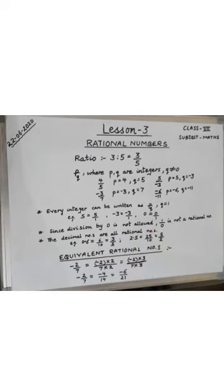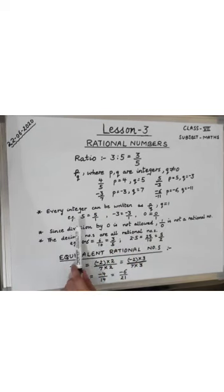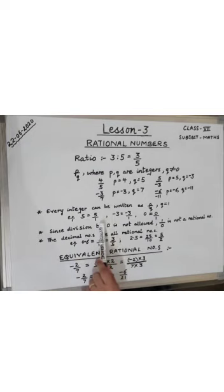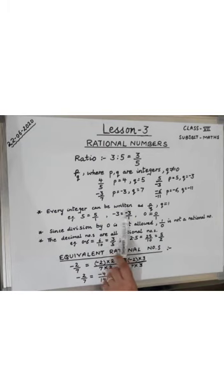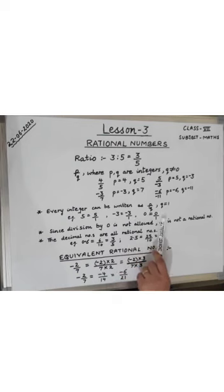Now some important points related to rational numbers. Every integer can be written as P upon Q where Q equals 1. For example, 5 is a whole number but it can be written as 5 upon 1, making it a rational number. Similarly, minus 3 can be written as minus 3 upon 1, and 0 can be written as 0 upon 1 — both are rational numbers.